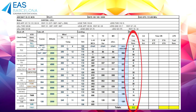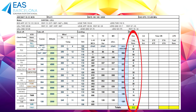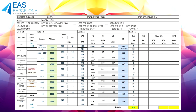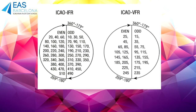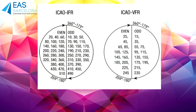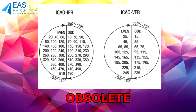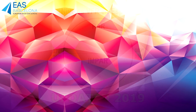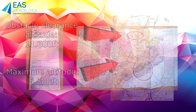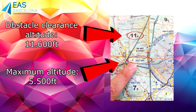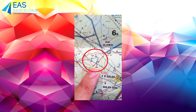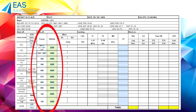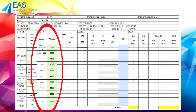We're going to write down all the data in the routing sheet — be careful not to write it in the wrong box. Once we have the tracks and distances, we're going to find our altitudes, taking into account the clock rule for altitudes which has changed recently. In the image we can see the old rule and the updated one. The aeronautical chart will show us the maximum VFR altitudes, the altitudes free of obstacles, and the most prominent obstacles along our route. Once we have selected the altitudes for each section, we will write it down in the routing sheet.